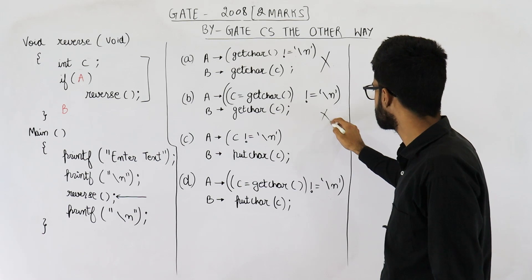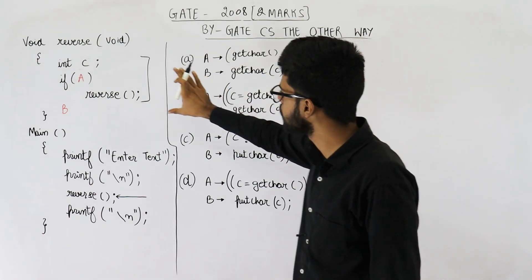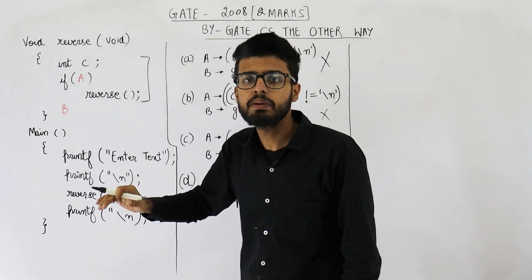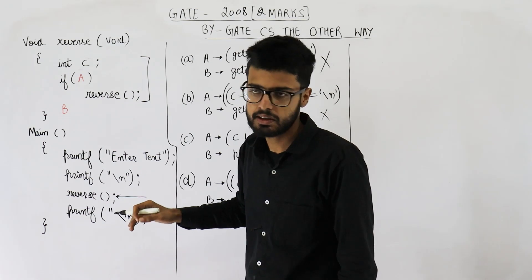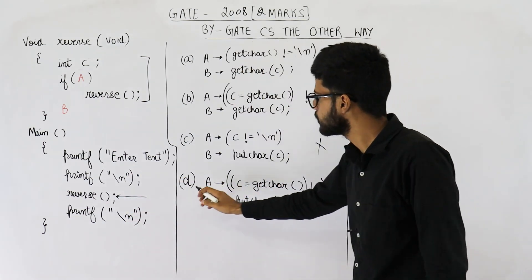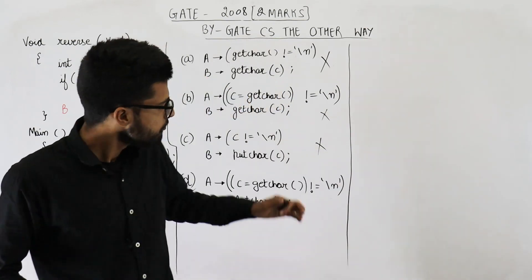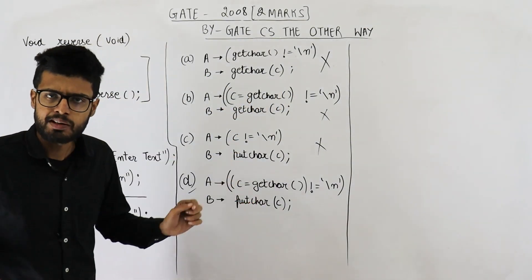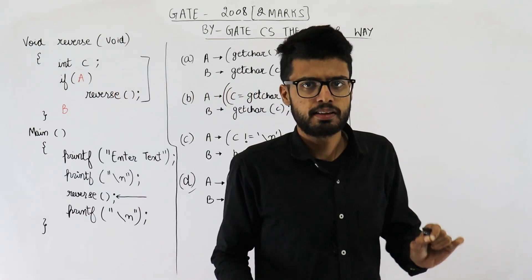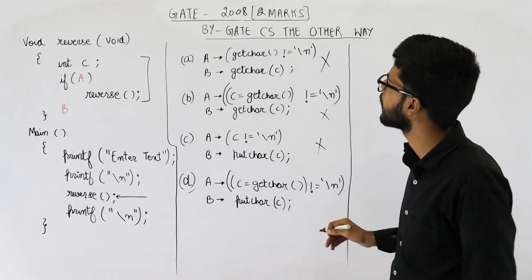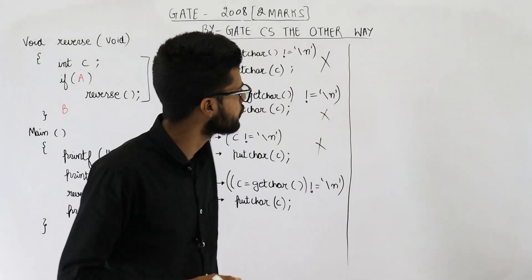Similarly, option B is also rejected, and option C is also rejected — option C has only putchar, meaning the code would only be capable of writing something on screen but would never accept any input. So option D is the correct answer. That was a shortcut, and I am not here to teach you only shortcuts. Even though I recommend using shortcuts in the exam, don't completely rely on them — you need to know how this code is actually working. So let us start the question now.